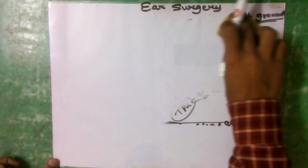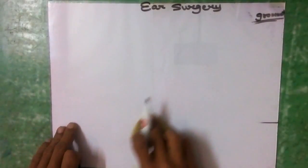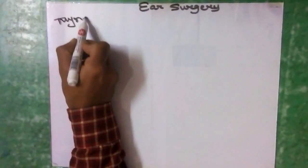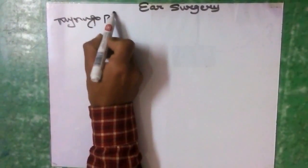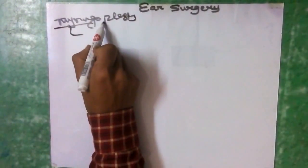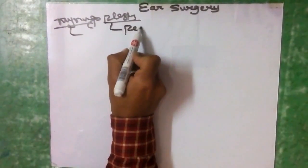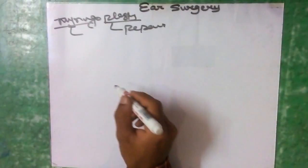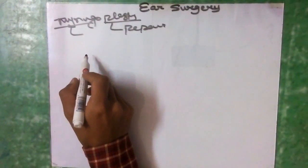The second surgery is myringoplasty. 'Myringo' means tympanic membrane and '-plasty' means repair. Any disease causing perforation in the tympanic membrane is an indication for myringoplasty. Repair of the tympanic membrane perforation can be performed by two methods: inlay (underlay) or overlay.